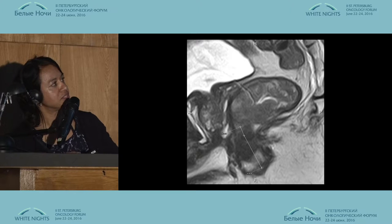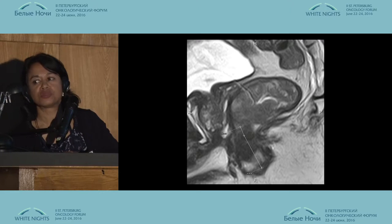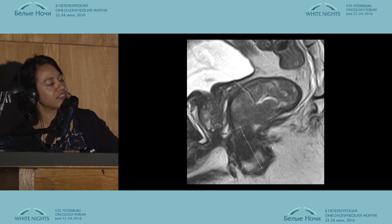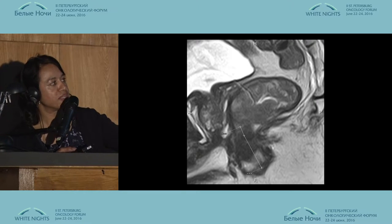These are the measurements we took. We always measure from the lowest point of the internal sphincter, which you see here, and that clinically correlates with the inter-sphincteric groove, because we're not really sure about the dentate line. If you take the internal sphincter and measure to the top of the puborectalis sling, that gives you the height of the anal canal. From the top of the puborectalis sling to the lower edge of the tumour gives you the distance to the top of the sphincter complex — so there's eight millimetres between the lowest edge of the tumour and the sphincter complex.